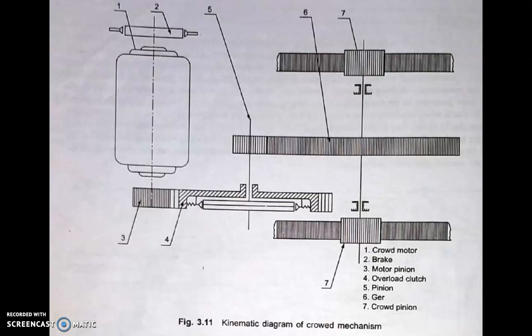Next is the crowd mechanism. The figure shows the crowd mechanism. It consists of a crowd motor, which delivers power through a pinion to an overload clutch. The overload clutch delivers power to a pinion which is in mesh with a gear. The gear drives the crowd pinion on both sides, which finally reciprocates the dipper stick with the help of a rack.